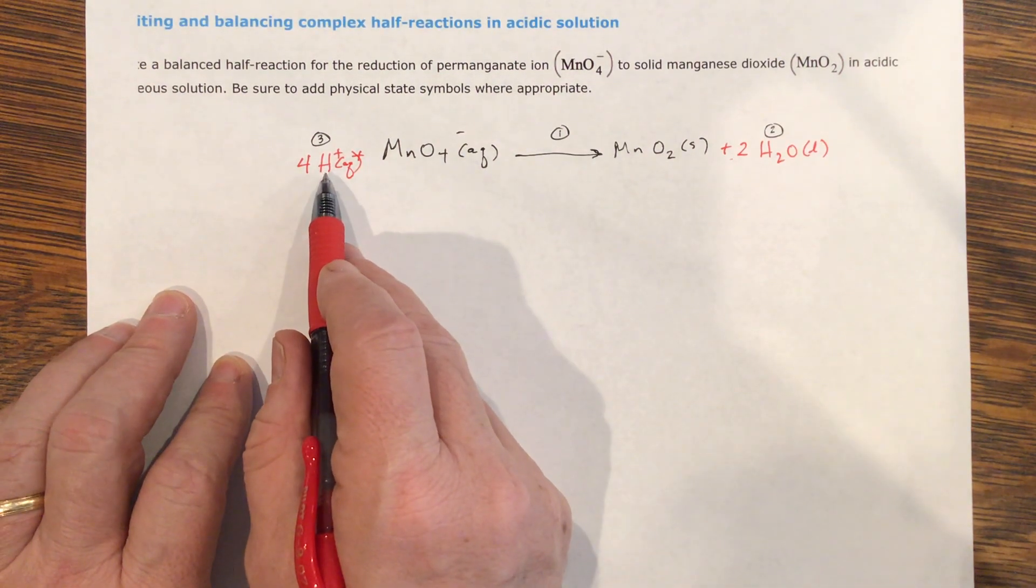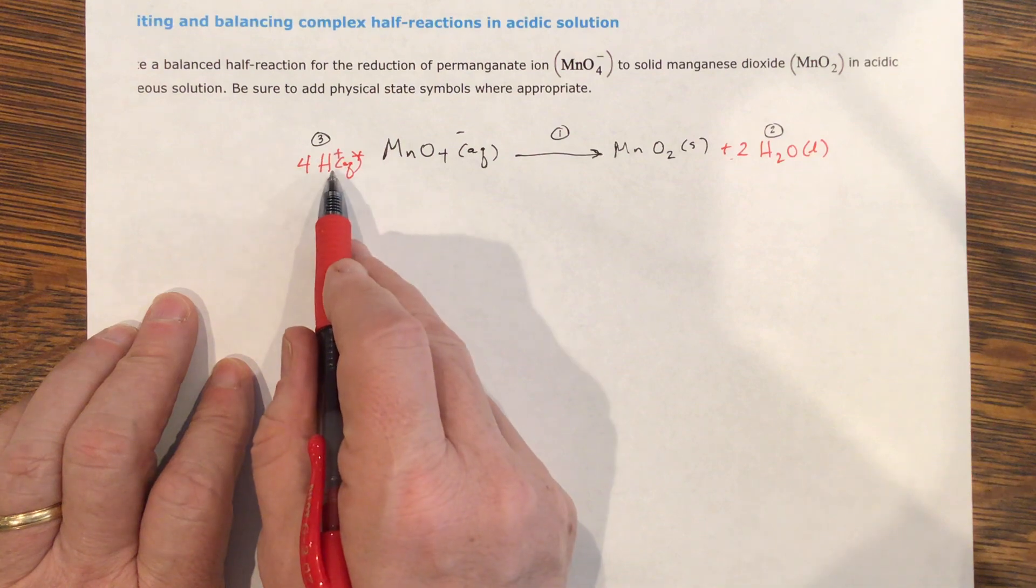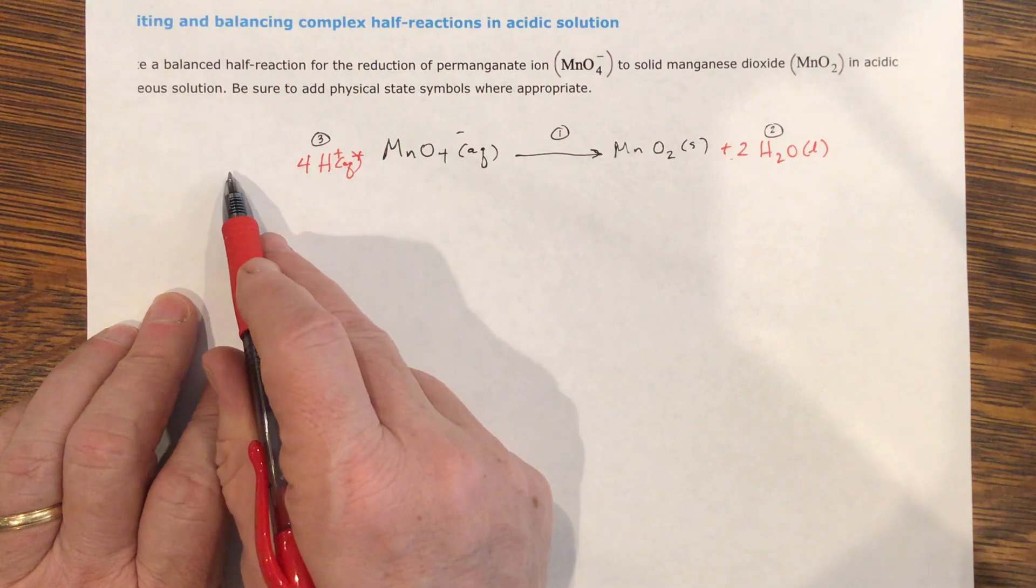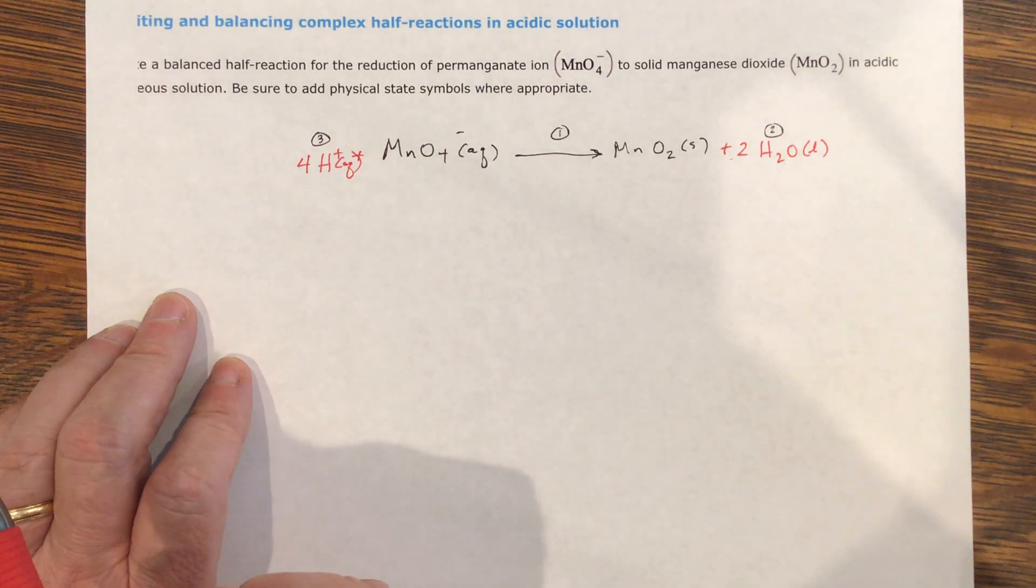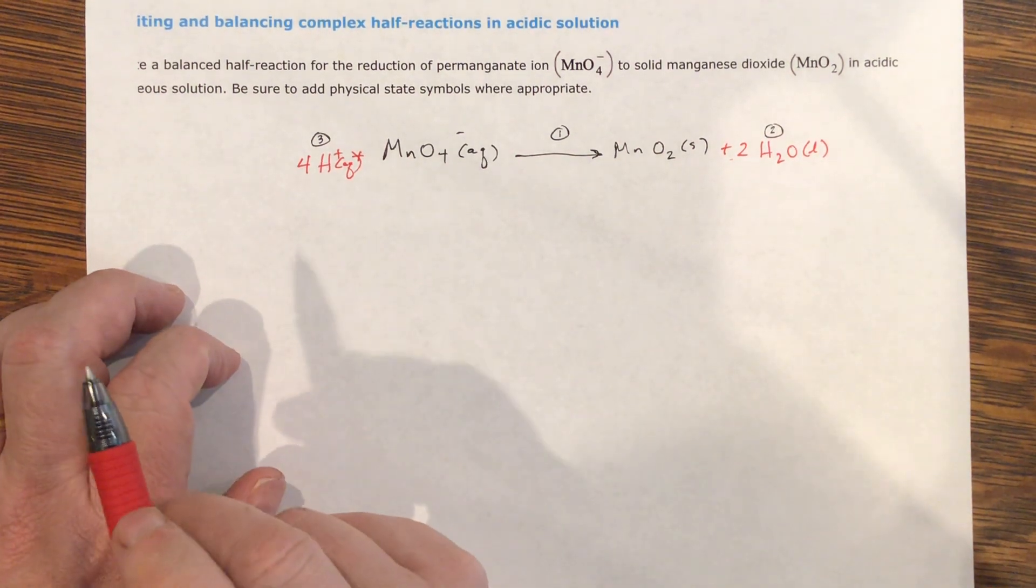If you wanted basic, I would have one more step, and I'd have to neutralize these pluses with OHs on both sides to balance. That would be one extra step.